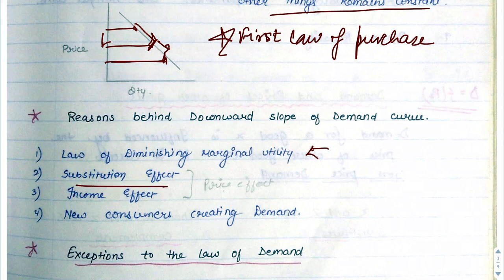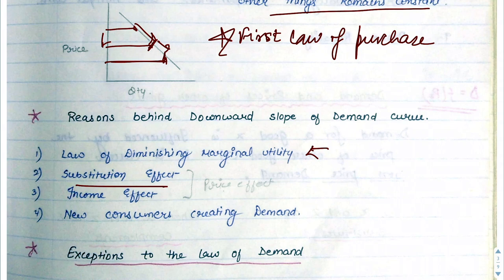Next is the substitution effect. Suppose a Samsung TV costs 40,000 and an LG TV costs 50,000. If the quality and everything is the same, we will prefer Samsung at 40,000. We substitute one good for another — this is the substitution effect.